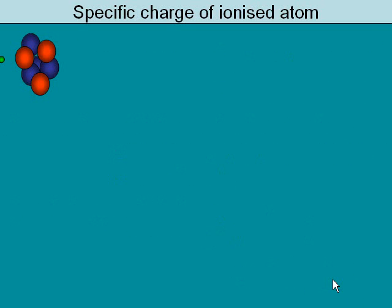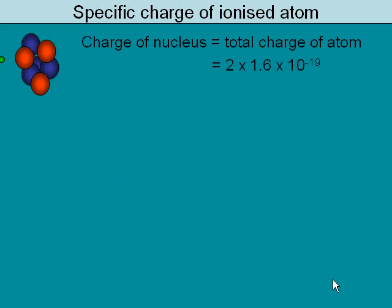If we were to work out the specific charge of an ionized atom, we carry out the same kind of calculation. But this time, remember there's an excess of two protons. This electron cancels one of the protons, so the total charge is plus two, or two times the charge of a proton.